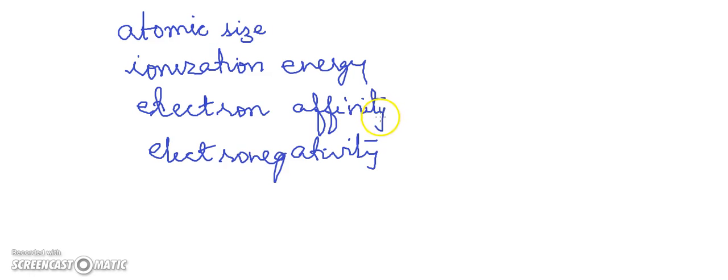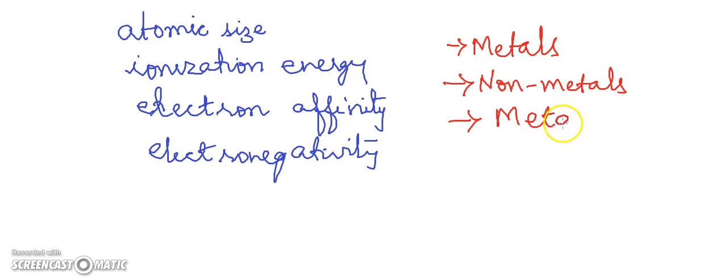So, the importance of P block lies in the fact that it includes three types of elements. What are the three types of elements in the P block? First, we have metals. Second, we have non-metals. And third, we have metalloids.